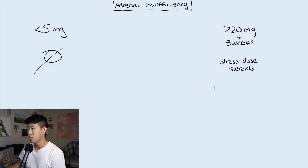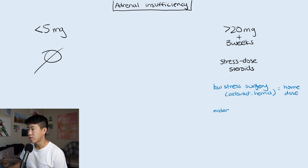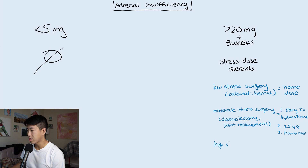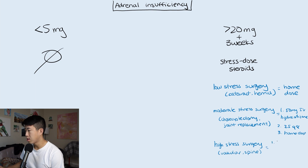How you dose stress steroids depends on the size of the surgical stressor. For low stress surgery such as cataract or hernia repair, just continue their home dose. For moderate stress surgery such as cholecystectomy or joint replacement, give 50 mg IV hydrocortisone before surgery, then 25 mg Q8 for the next 24 hours, then return to home dose. For high stress surgery such as complex vascular or spine surgery, give 100 mg IV, then 50 mg Q8 for 24 hours, then 25 mg Q8 for the next 24 hours, then resume home dose.